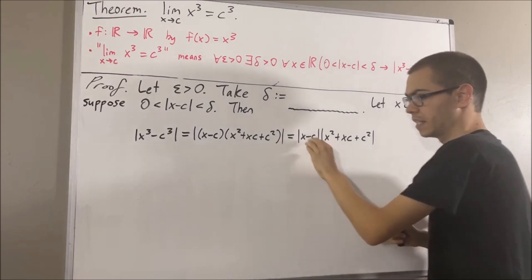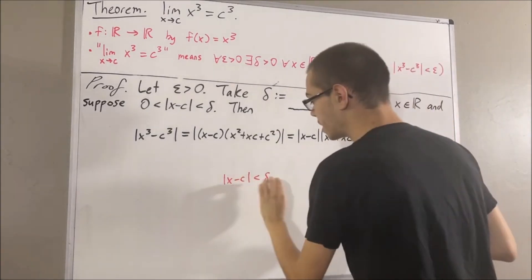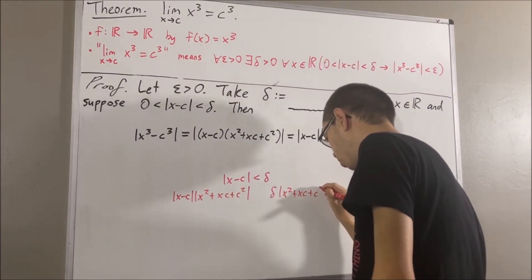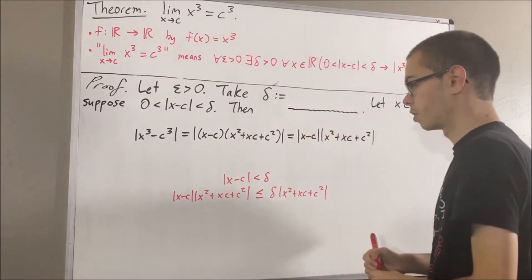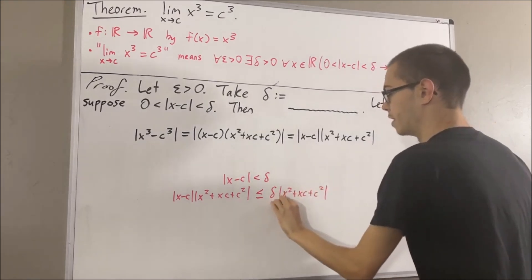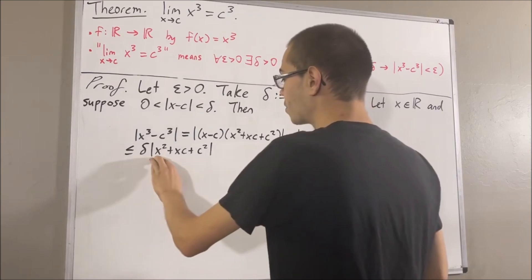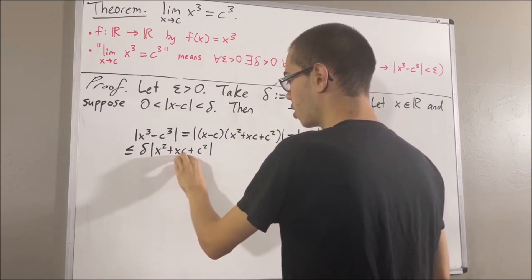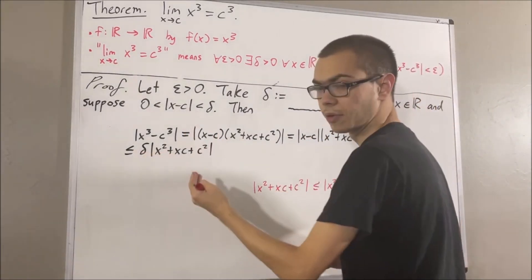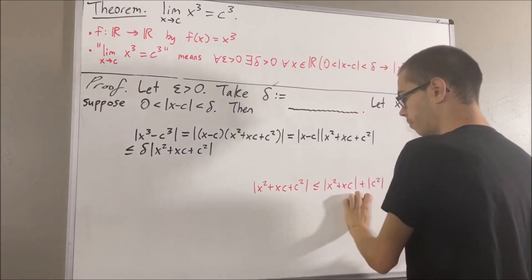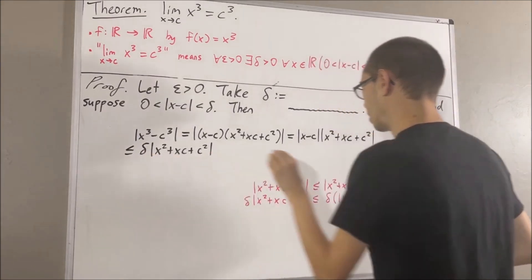Since the absolute value of x minus c is less than delta, if we take the absolute value of x squared plus xc plus c squared and multiply it on both sides of this inequality, since this quantity is greater than or equal to zero, the less than will become less than or equal to. Then, by the triangle inequality, the absolute value of x squared plus xc plus c squared is less than or equal to the absolute value of x squared plus the absolute value of xc plus the absolute value of c squared. And since delta is greater than zero, if we multiply delta on both sides of this inequality, the sign of the inequality will remain the same.